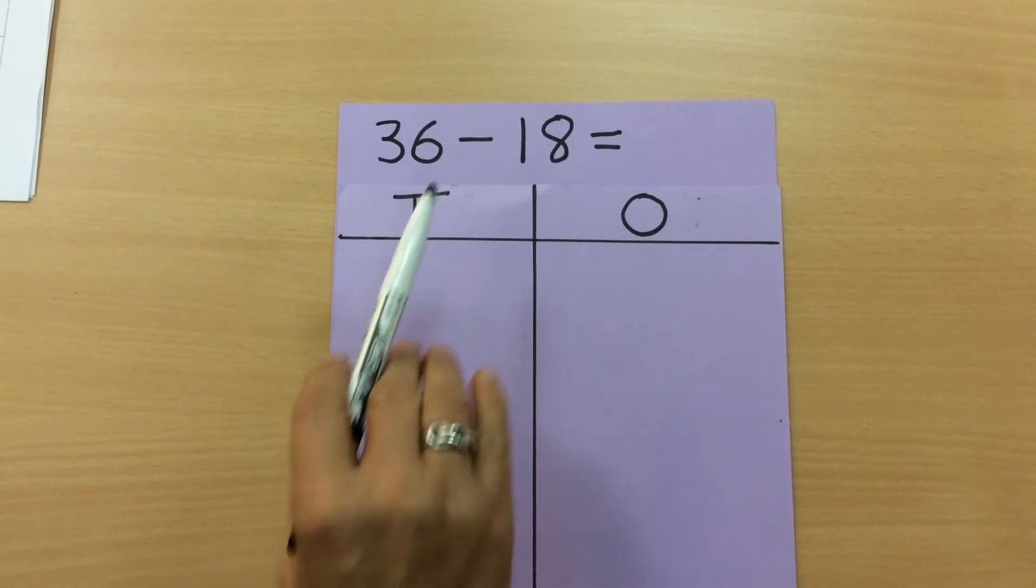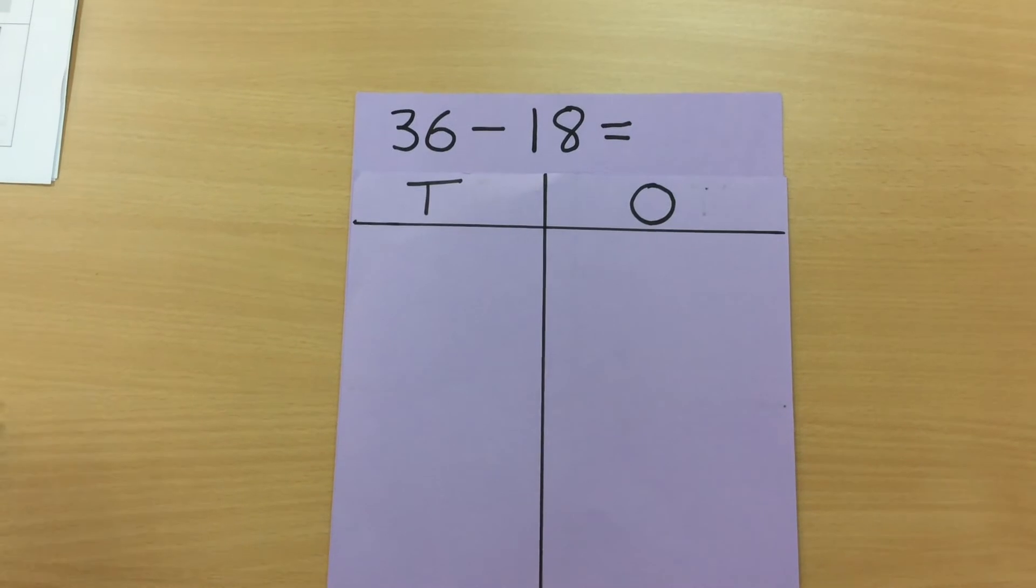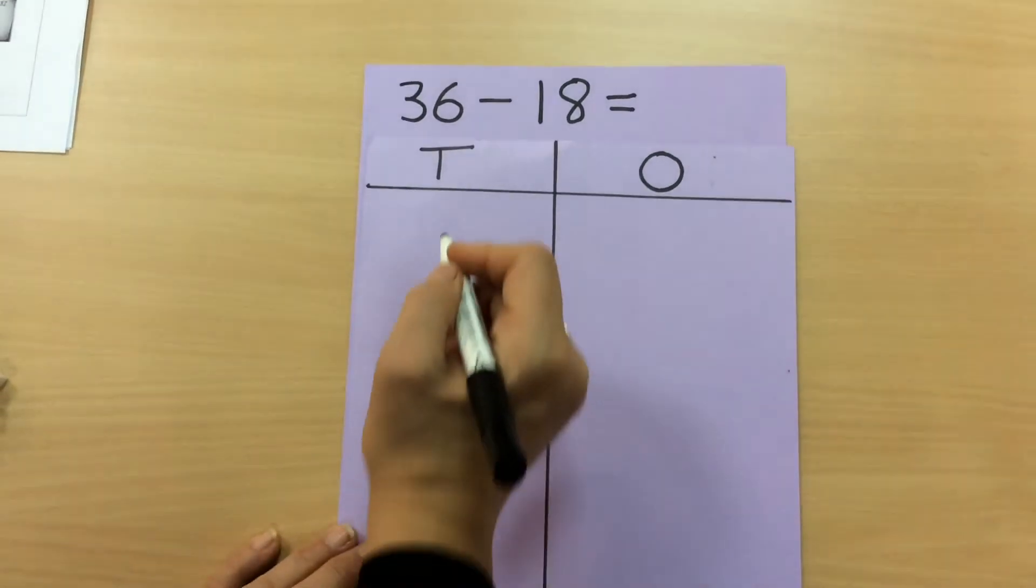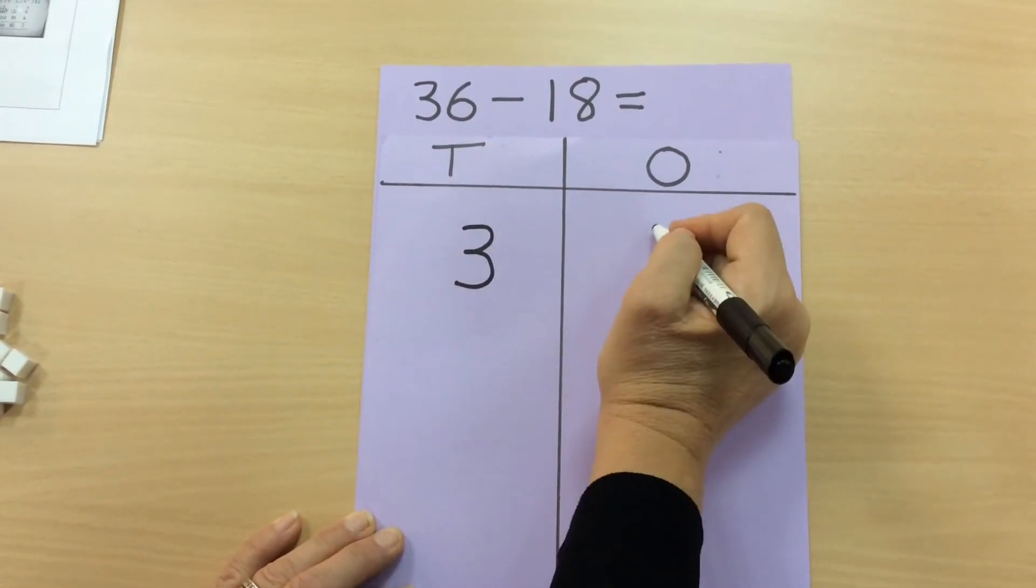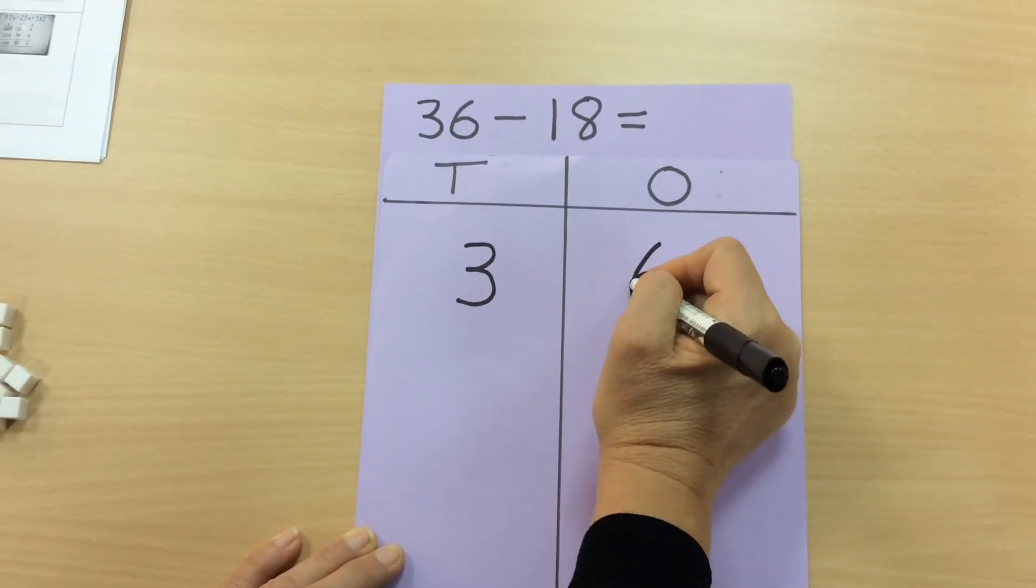So once the children have solved in a linear form, we can then move on to writing it as a column subtraction. So we have our three tens in the tens column and our six ones.